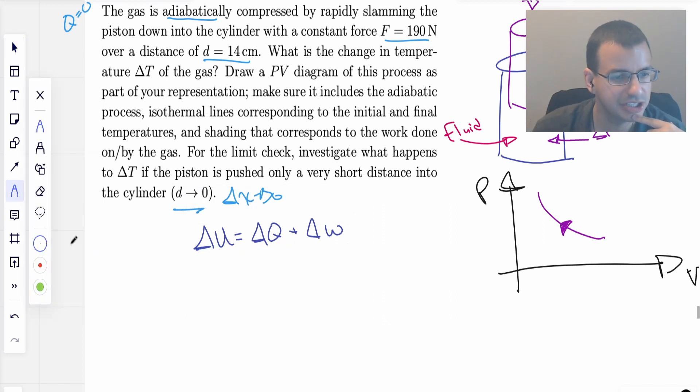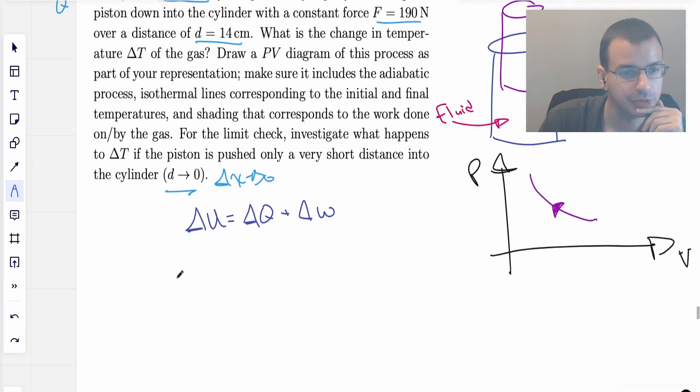The other thing is I put deltas here, the change in heat, change in work, but that's completely unnecessary. Heat is always a change, always a flow from one side to the other, and work is always a change in energy. The delta is implied. I like to put it in there just to draw my attention to it. First thing we know is adiabatic, so change in Q is zero. Our change in internal energy is going to be completely due to work.